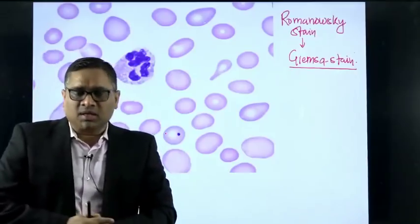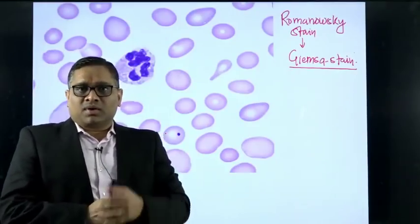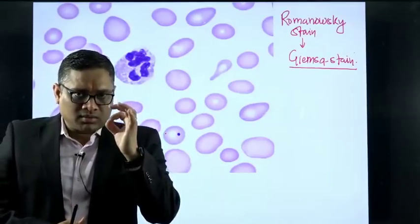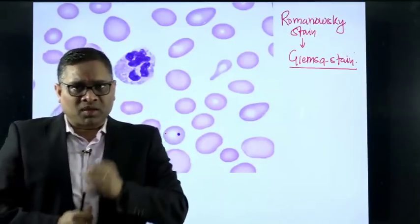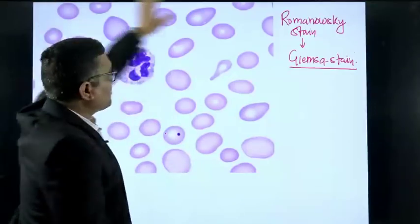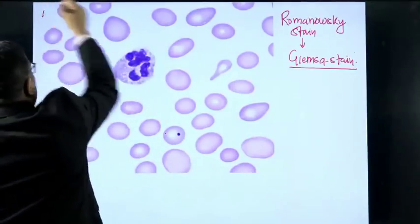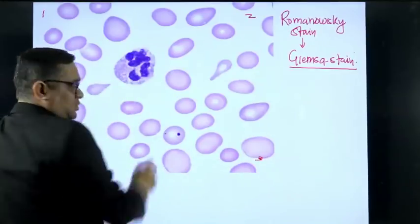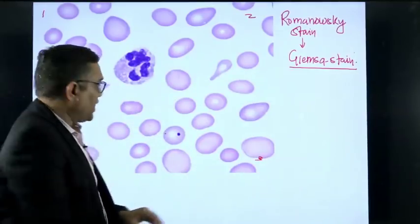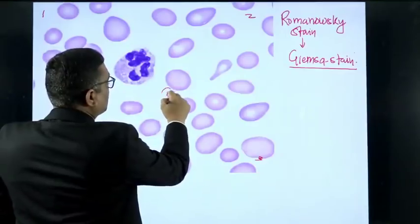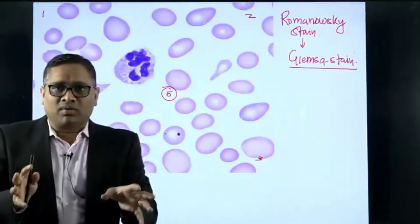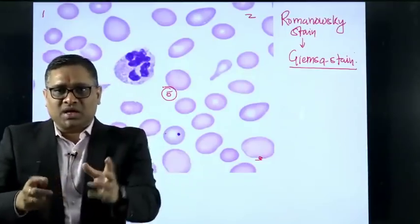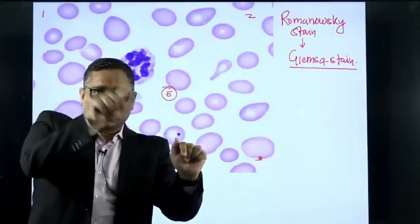As I discussed in an earlier discussion, whenever we are seeing any image, we must apply the rule of 5. Rule of 5 means we look at all 5 areas: all 4 corners, and the 5th area is the central part of the slide. That is how our approach should be — we look at all 4 corners and the center.